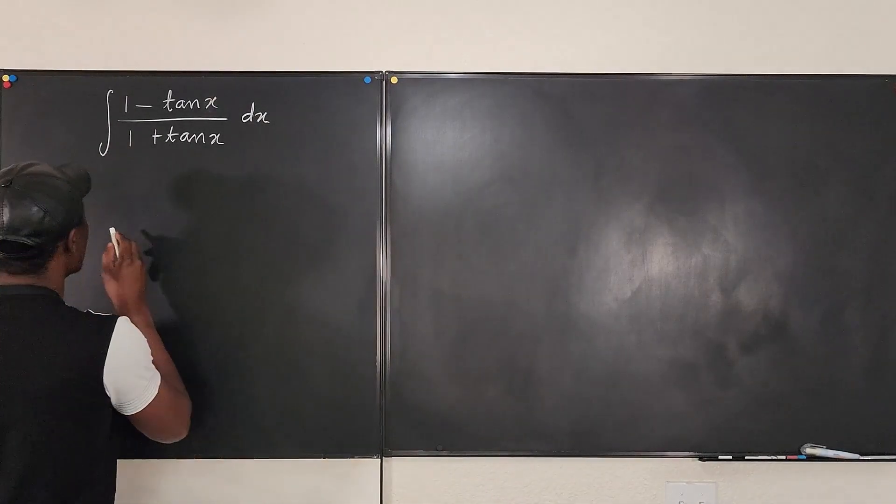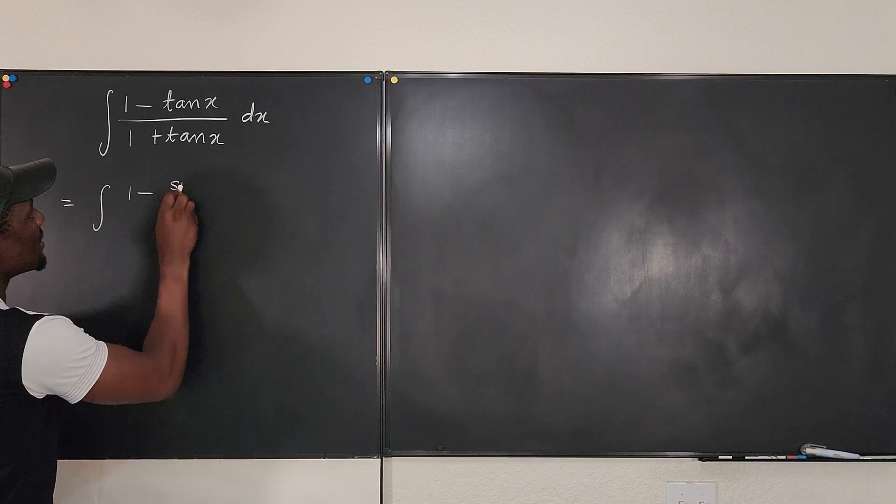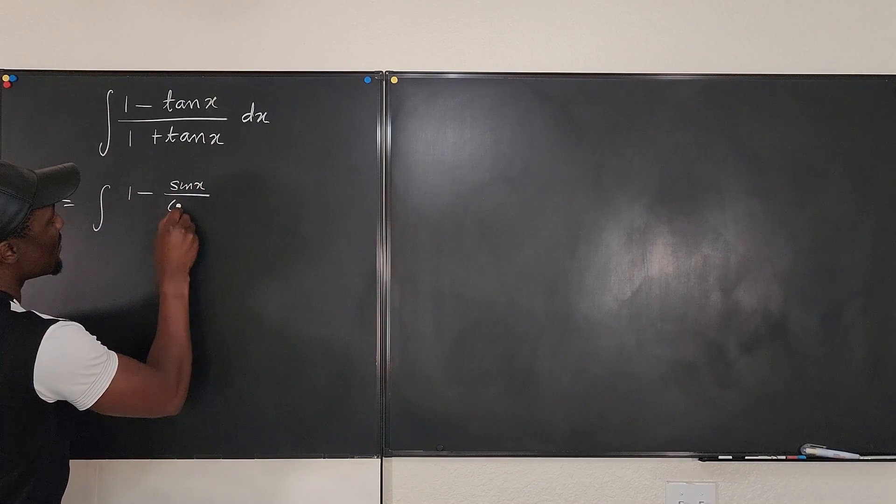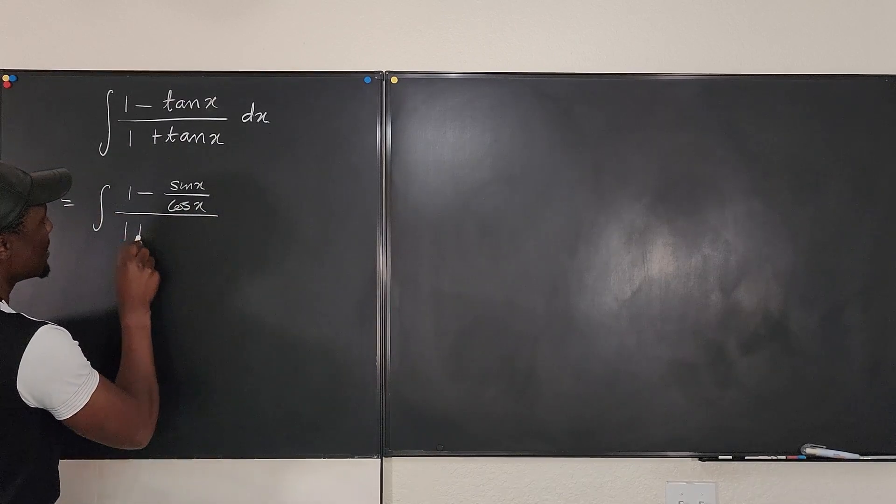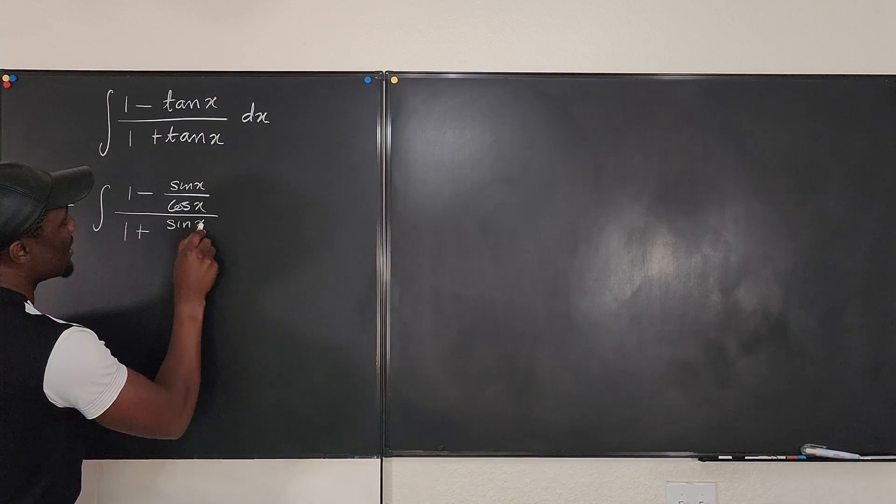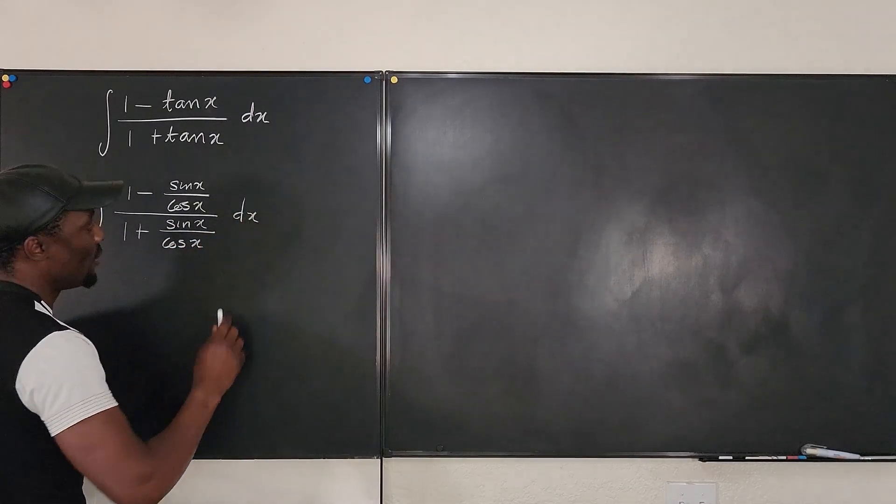So what I have here will be equal to the integral of 1 minus sine x over cosine x divided by 1 plus sine x over cosine x.